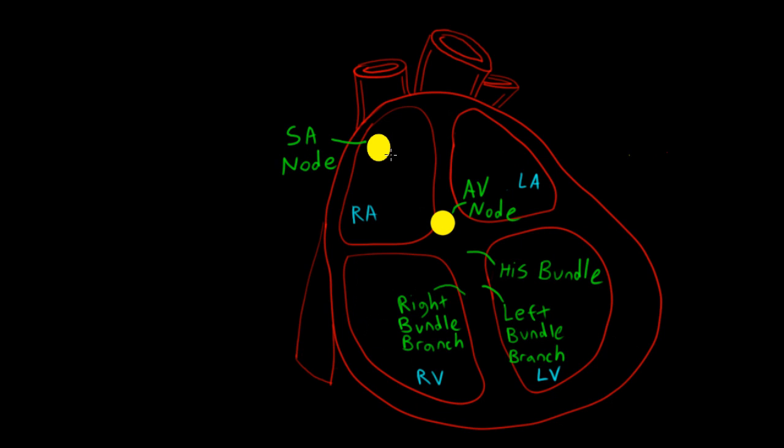The electrical activity of the heart starts in the sinoatrial node, which is located here in the right atrium. First, we get atrial depolarization, which we see on our 12-lead EKG as a P wave.